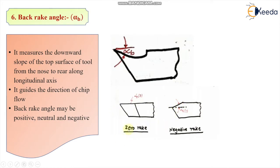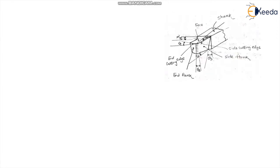Zero rake angle has a very well-known application — the thread cutting tool. If you look at the thread cutting tool, it has zero rake angle. The zero rake angle is used when the tool is used for thread cutting operations. Another important application of zero rake angle is when machining brasses to get a very good surface finish; we use zero rake angle in the case of brasses. These are the values that can be kept for back rake angle: positive, negative, or zero.